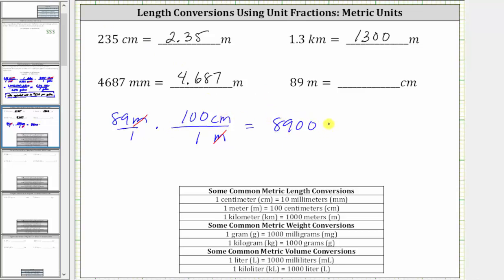The units are centimeters. 89 meters is equal to 8,900 centimeters. I hope you found this helpful.